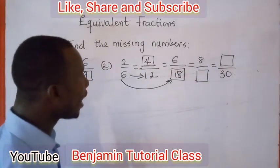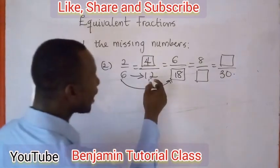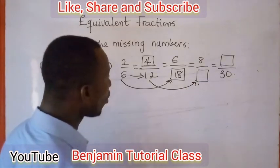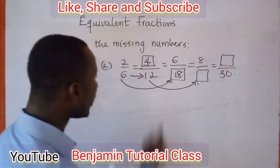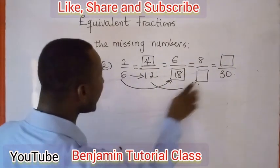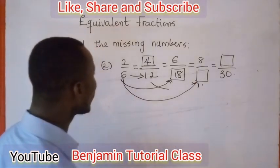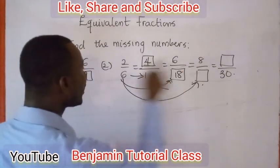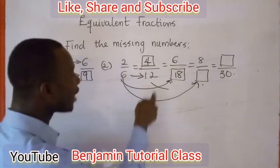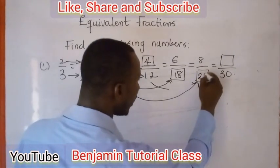For the next part, you can link 8 and 2 together. Say 8 divided by 2, which gives 4. You then say 4 multiplied by 6, which gives 24. So the missing denominator is 24, giving us 8 over 24.